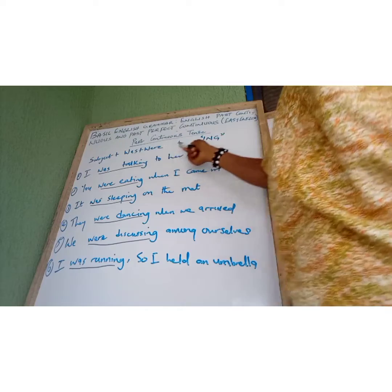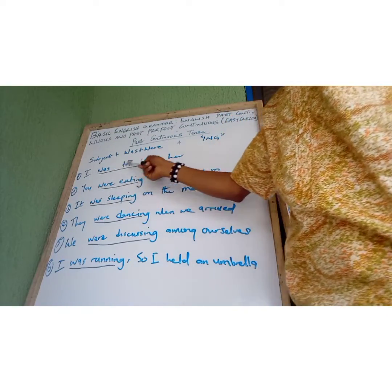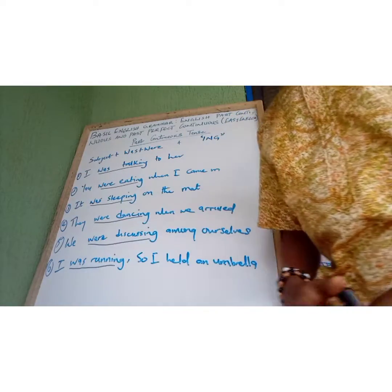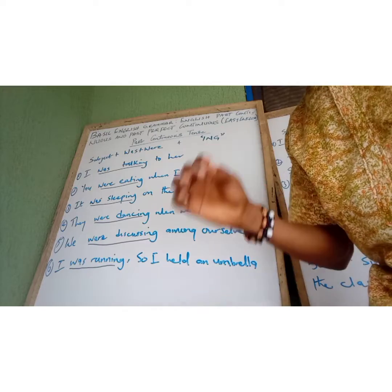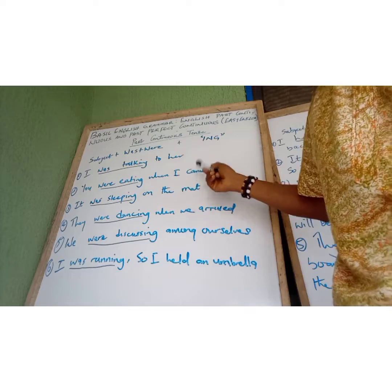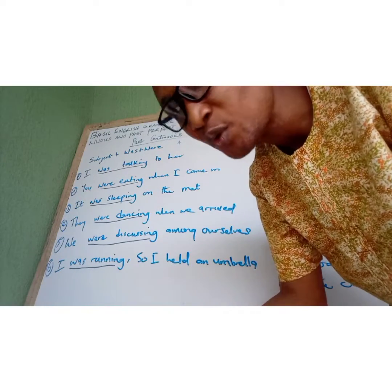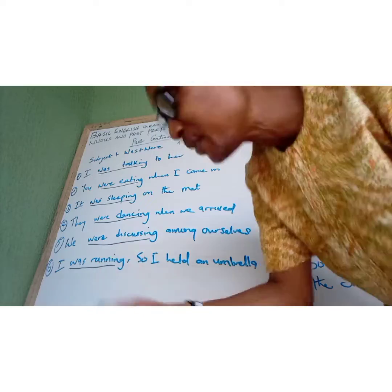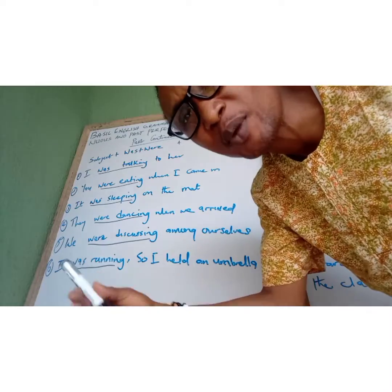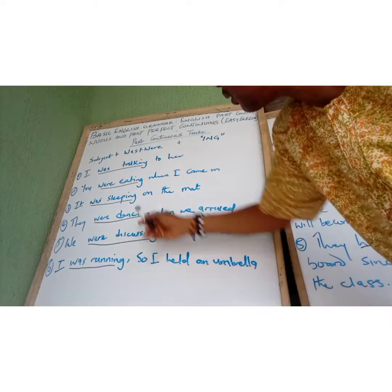Like I said, the subject will determine the verb. Look at the first example: 'I was talking to her' — 'was talking' is the past continuous verb or tense. Then: 'You were eating when I came in.' 'You were sleeping when I came in.' Then: 'It was sleeping on the mat' — it could be an animal, it could be your pet. 'It was sleeping on the mat.'